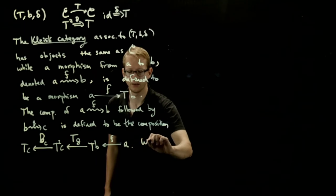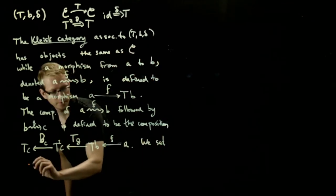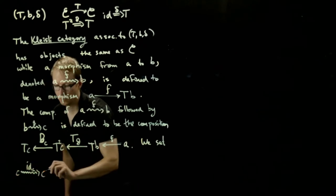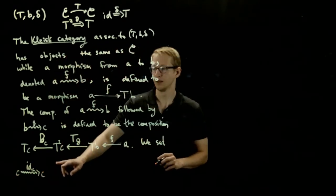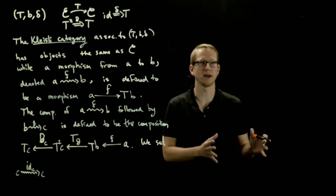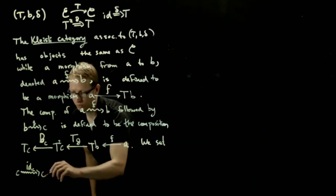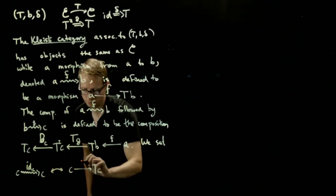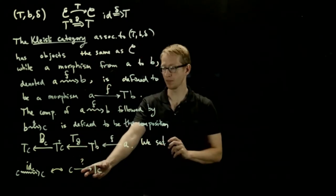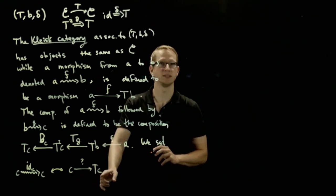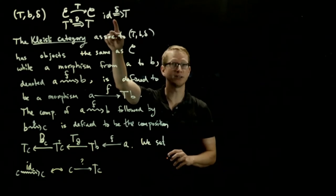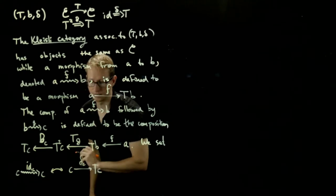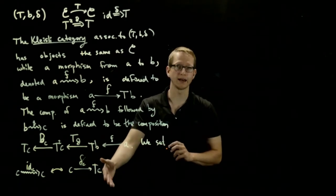We can also define the identity map on C. First let's write it as a squiggly arrow. We have to define the identity map for every morphism. But now that we're in the Kleisli category, we know that this map corresponds to a map from C to TC. And the question is, what is that map? Well, we have a map from C to TC. That's exactly the natural transformation delta. So we define this to be delta C. And this map will turn out to act as the identity for this composition.